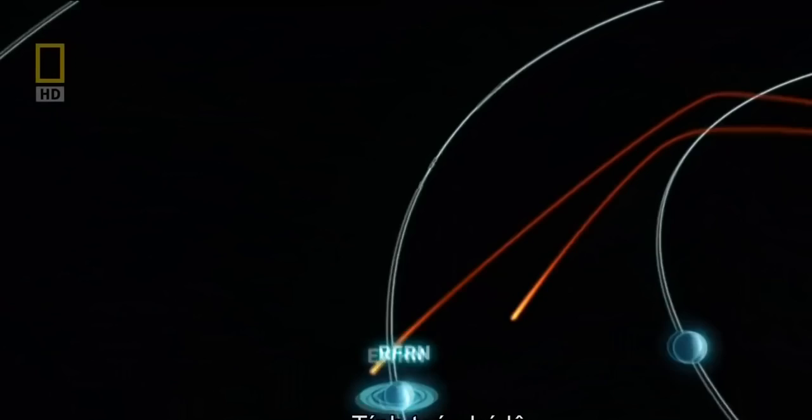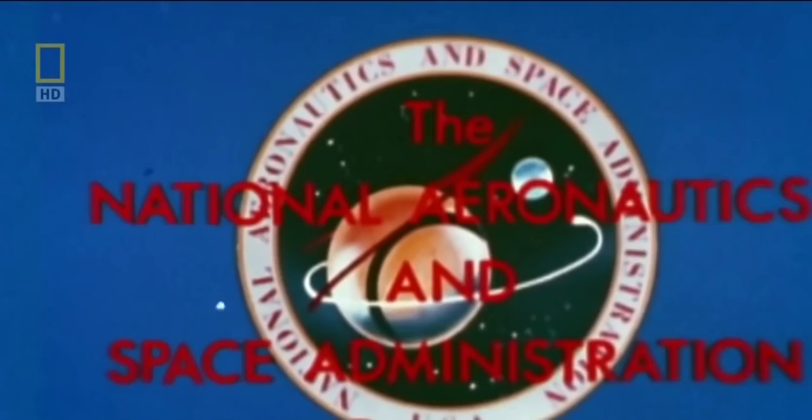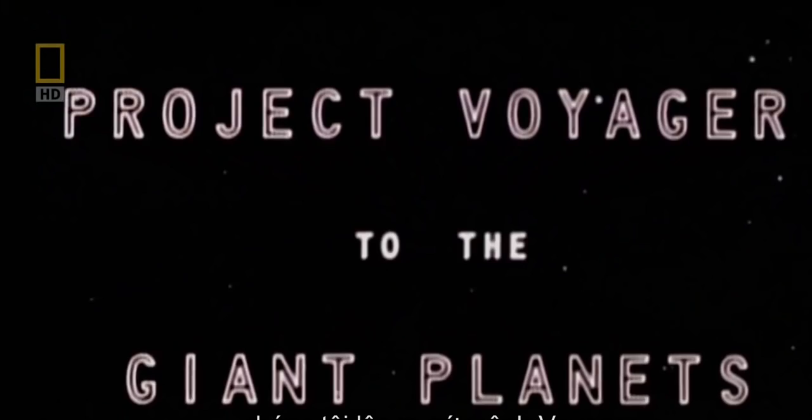This mathematical sleuth work reveals a rare window where the planets are perfectly aligned for a visit. There's an opportunity every 176 years for a single spacecraft to fly by all four giant planets. That was 1977, and so we created the Voyager mission to start on that journey.